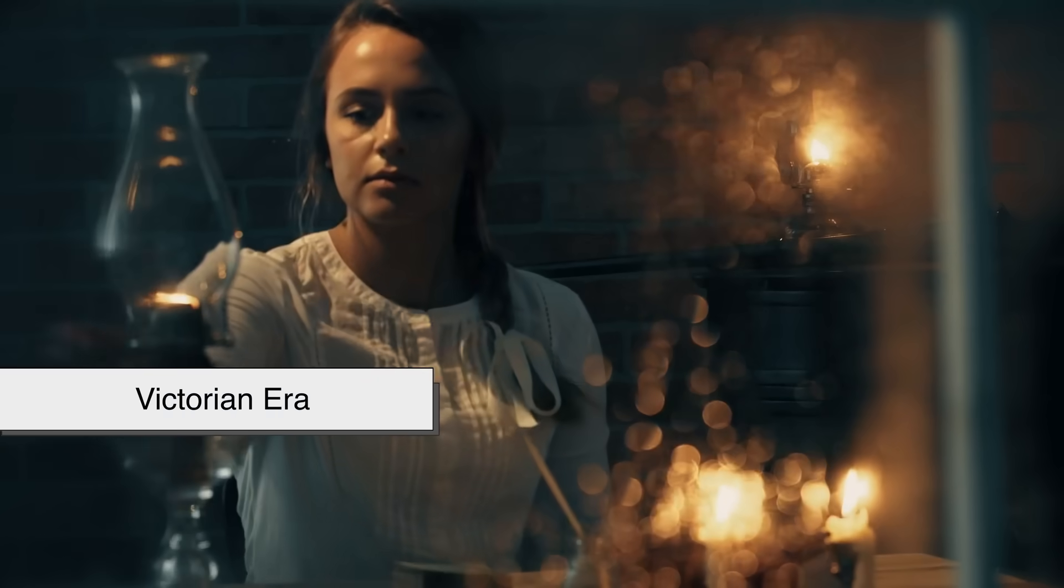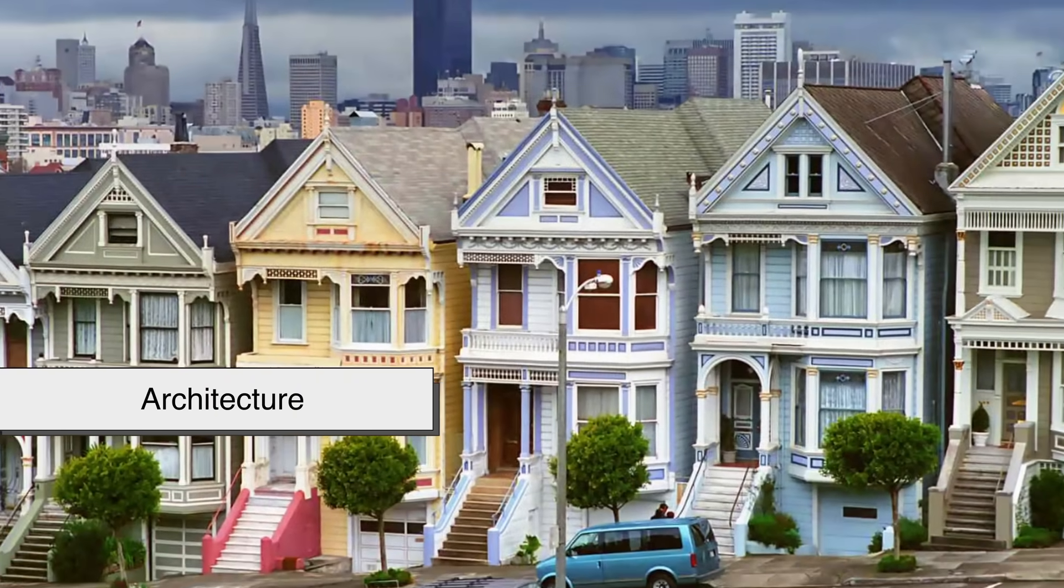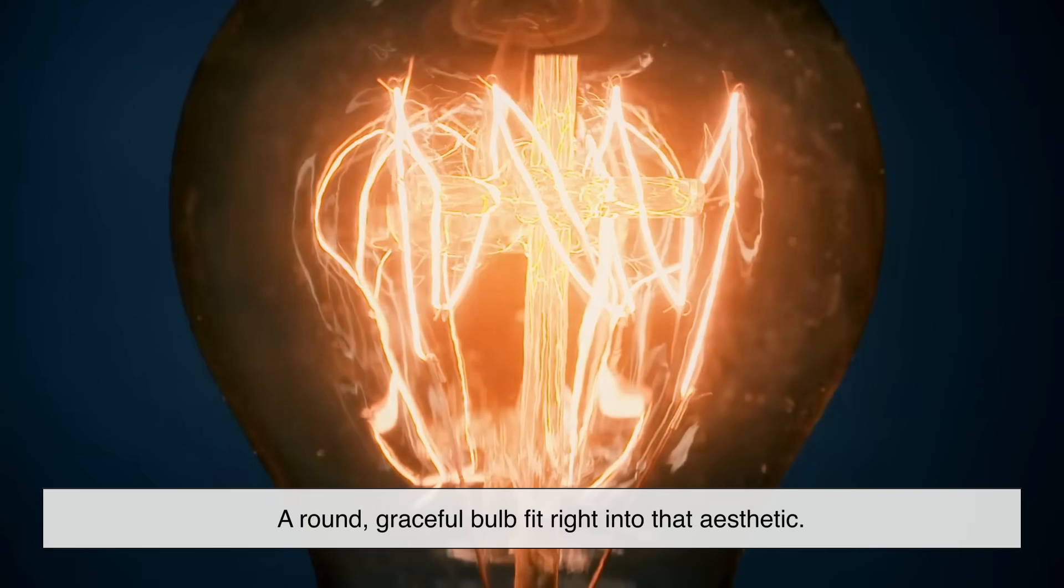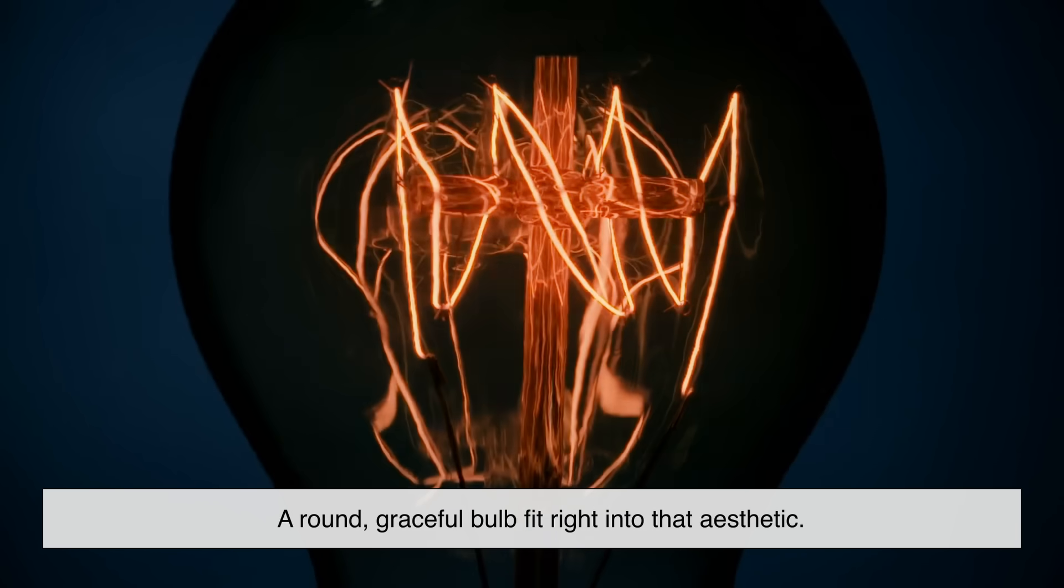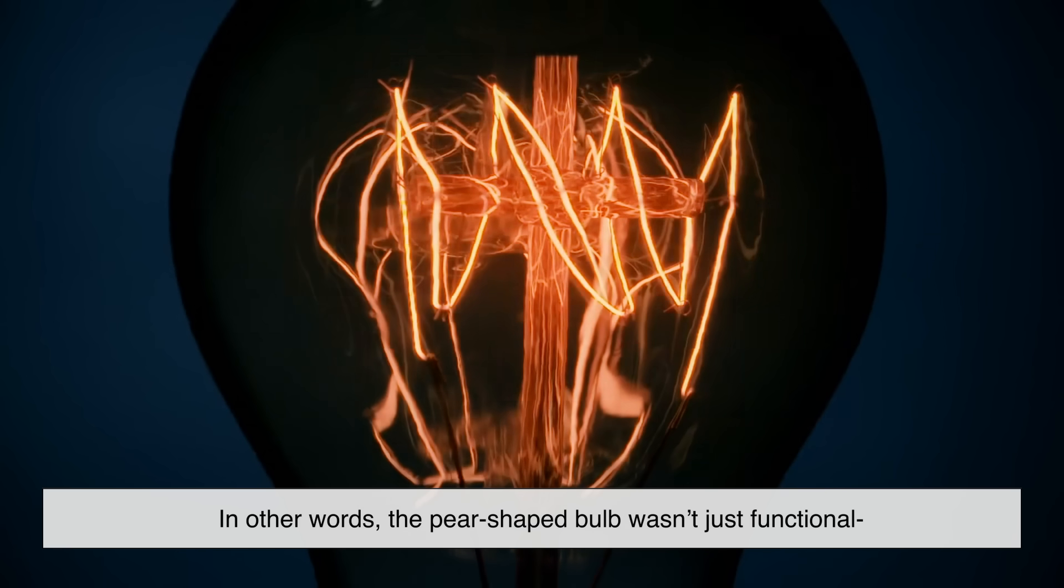Back in the Victorian era, curves and flowing lines were fashionable in architecture, furniture, and design. A round, graceful bulb fit right into that aesthetic. In other words, the pear-shaped bulb wasn't just functional, it was stylish too.